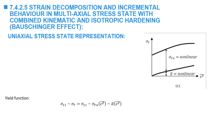The yield function in a uniaxial stress state is given by the difference between sigma 11 and the yield stress. The yield stress is given as the sum of the center of the yield surface and sigma y alpha. So we compare sigma 11 with sigma yield, where sigma yield is equal to sigma y alpha plus alpha.